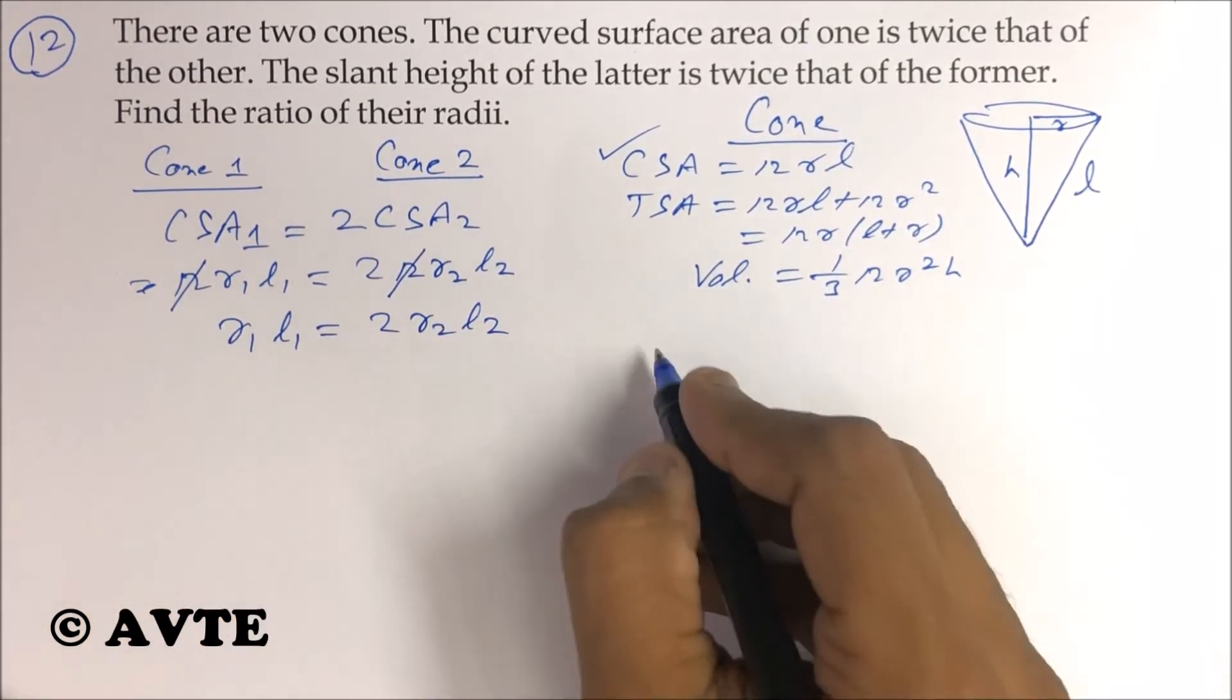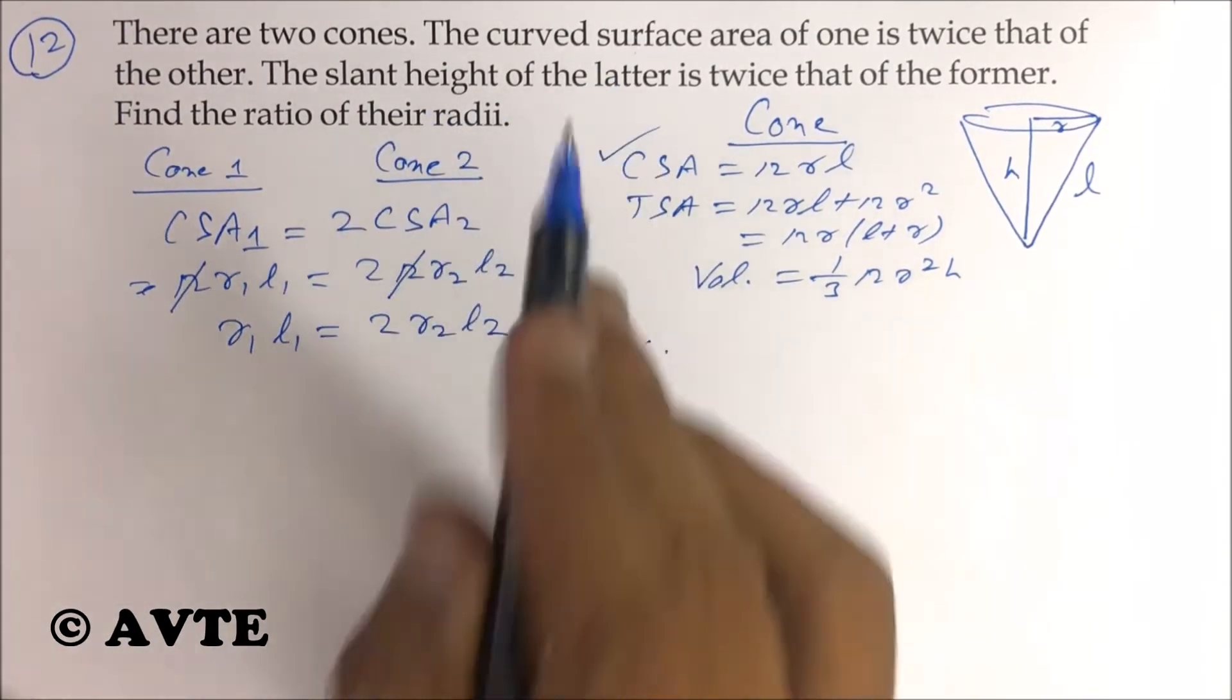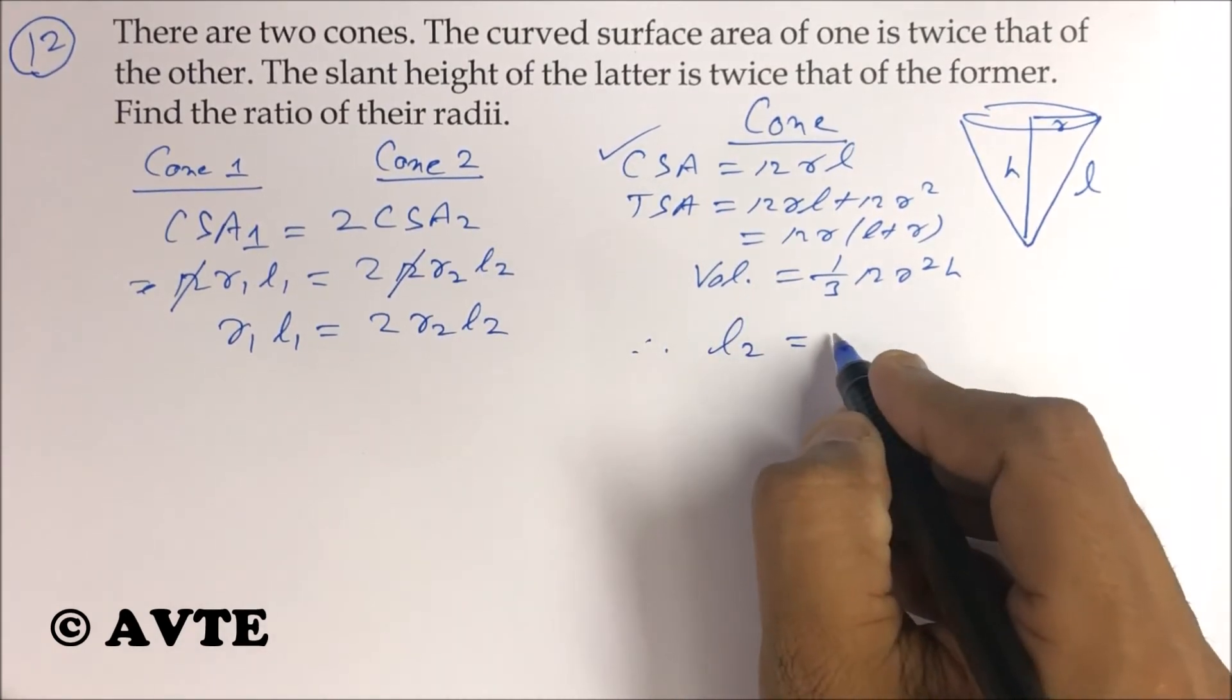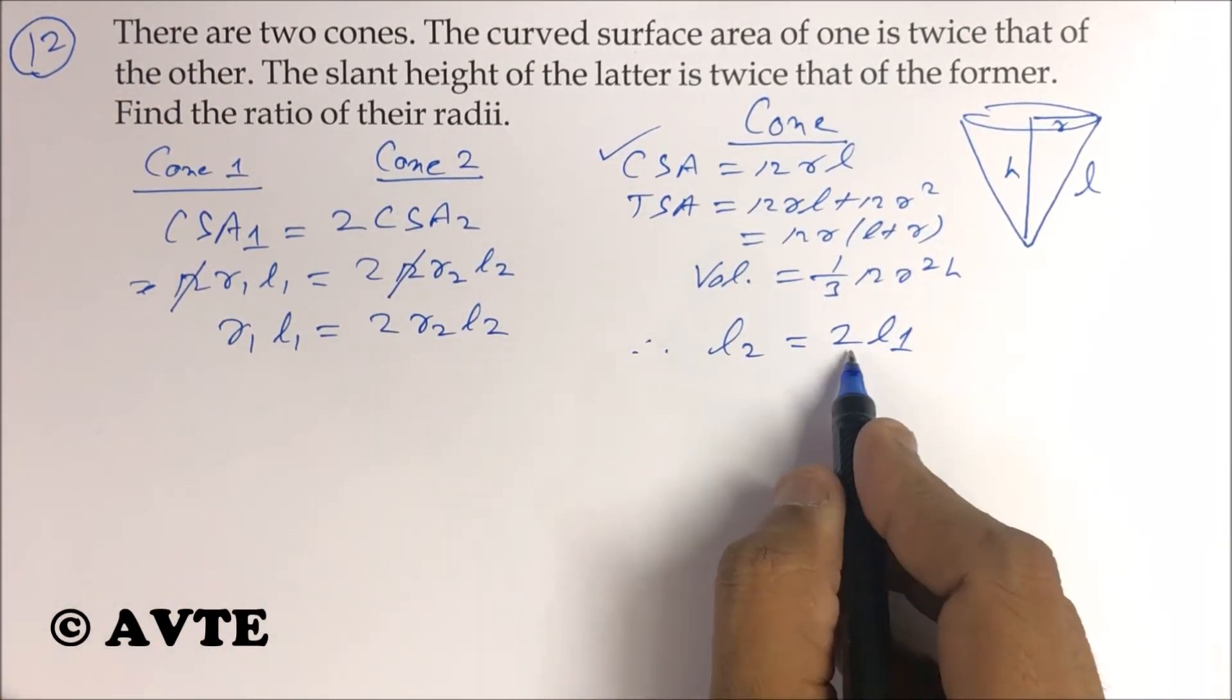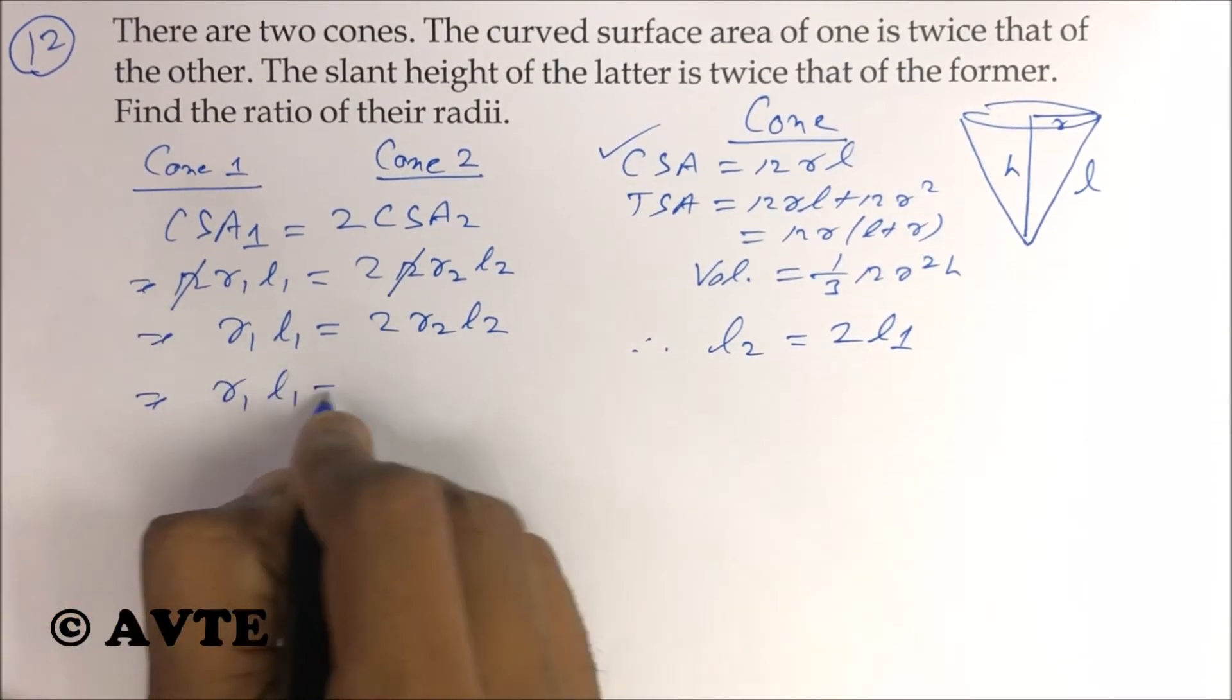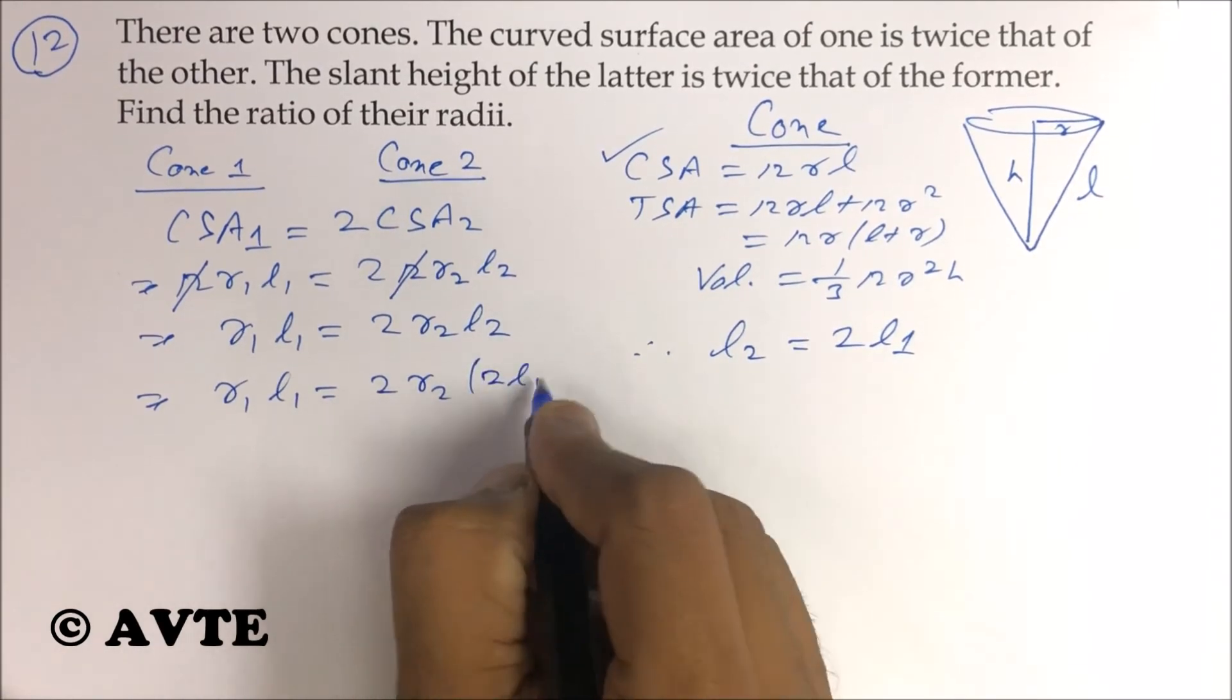And we have given that the slant height of the latter one, means the second one, is twice the slant height of the former. So L2 is 2 L1. It means the value of L2 is 2 L1.